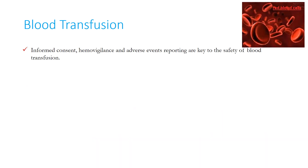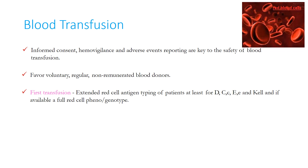For blood transfusion, informed consent, haemovigilance, and adverse events reporting are key. One must favor voluntary, regular, non-remunerated blood donors. At the time of the first transfusion, extended red cell antigen typing for D, C, c, E, e, and KEL should be done if available, and preferably a full red cell phenogenotype including antibodies to E, C, and anti-KEL alloantibodies.